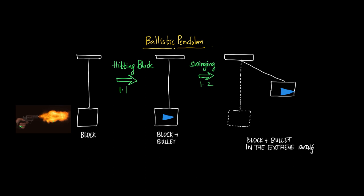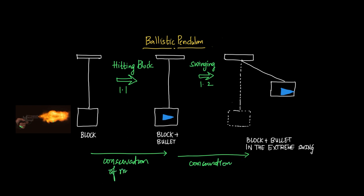We divide this into two halves: one where the bullet is hitting the block, and two where the bullet plus block swings from initial to the extreme position. In the first half, conservation of momentum applies. In the second half, conservation of mechanical energy applies.